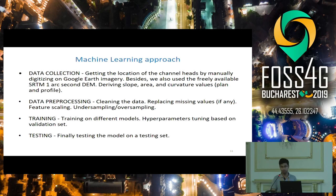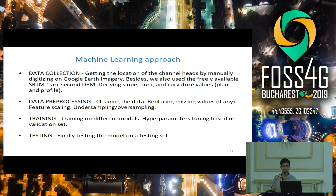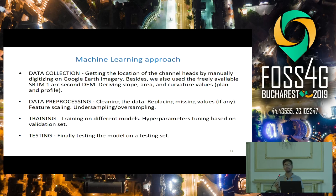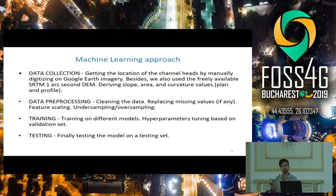This is the workflow. The first step is data collection — mostly digitization on Google Earth. The next step is preprocessing. Many times there may be missing values, which we fill by average values or on a case-by-case basis. Feature scaling is also important: for example, slope values always lie between 0 and 1, but flow accumulation values can be in the thousands. So we perform feature scaling to bring all features to the same scale.